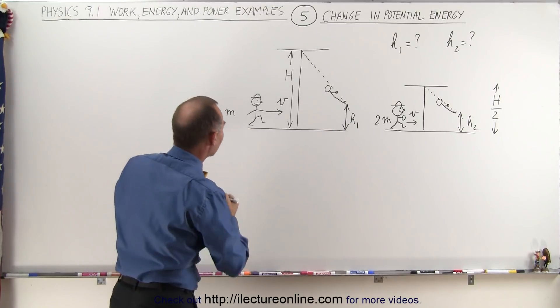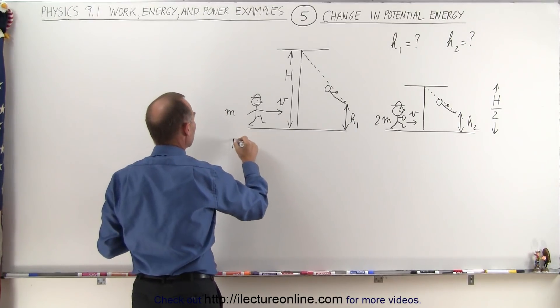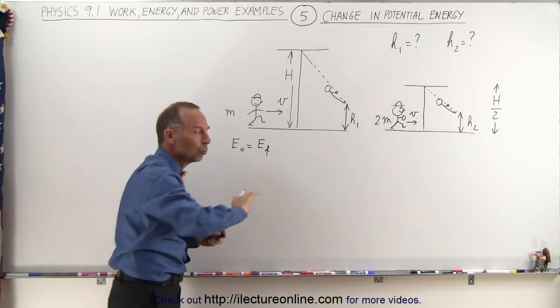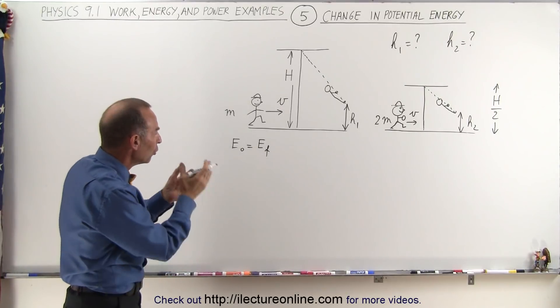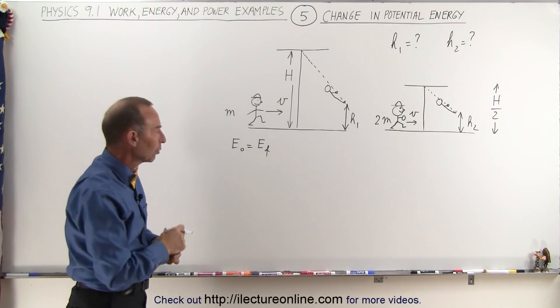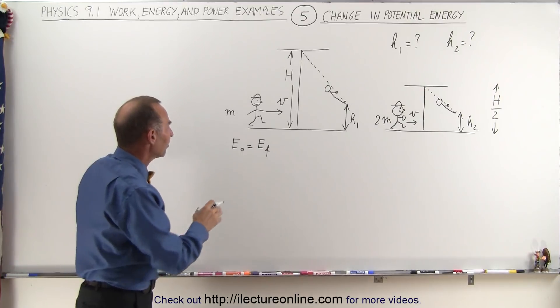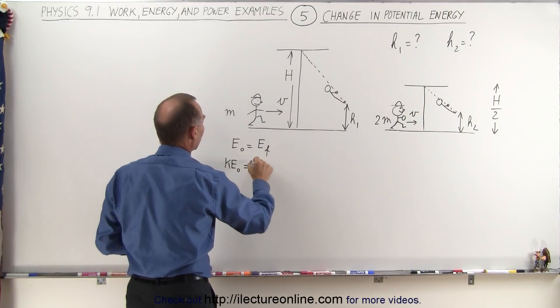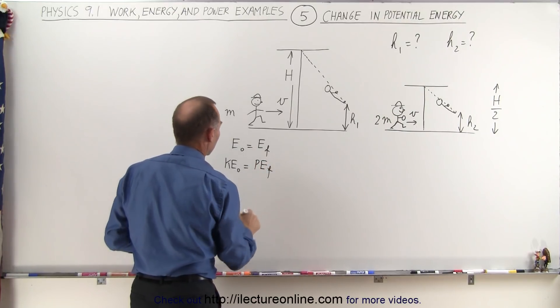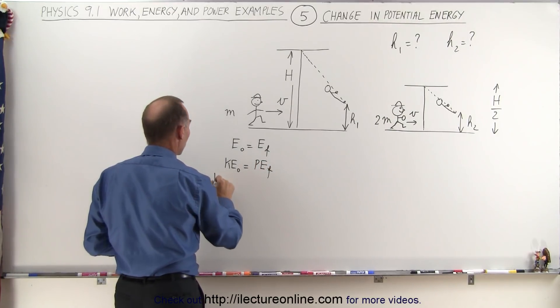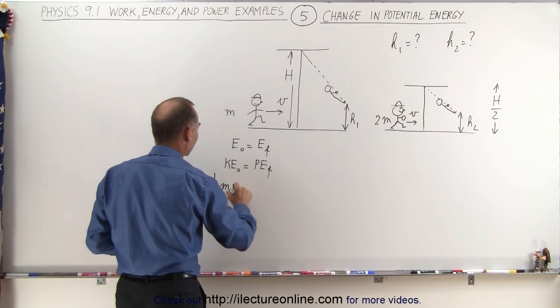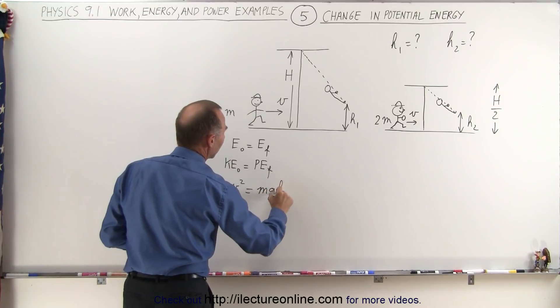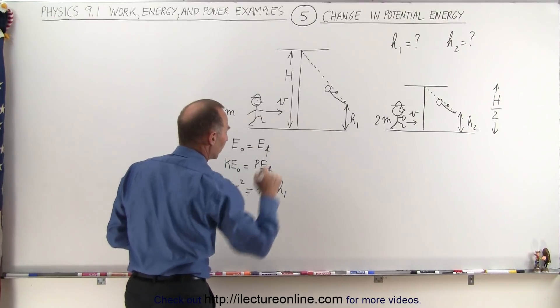The way we approach that is to say that the initial energy must equal the final energy. And presumably there's no friction, wind resistance, anything like that. So no energy is lost to overcoming friction or wind resistance. And so we can say that we started with some initial kinetic energy and ended up with some final potential energy. The initial energy will be one-half the mass times the velocity squared, and the potential energy will be mgh1.